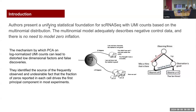The authors present in this paper a unifying statistical foundation for single-cell RNA-Seq data with UMI counts based on a multinomial distribution. They show that the multinomial model adequately describes negative control data and there is no need to model zero inflation. So one of our questions is: what is zero inflation, and why do we need to implement a model like this?